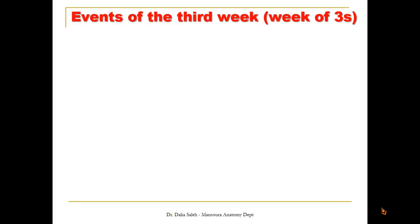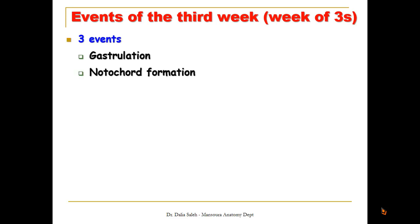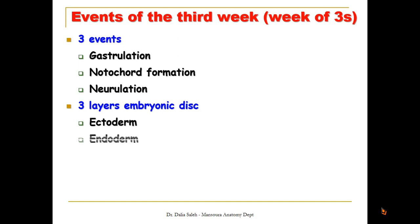The objectives of my presentation are the events that take place at the third week of development — we also call it the week of threes. There are three major events: gastrulation, notochord formation, and neurulation. Also in the third week, there is formation of the three germ layers of the embryonic disc: the ectoderm, the endoderm, and the mesoderm. The mesoderm differentiates into three parts: the paraxial mesoderm, the intermediate mesoderm, and the lateral plate mesoderm. We should know the formation and the derivatives of each layer.